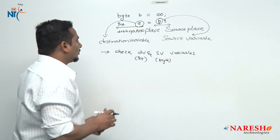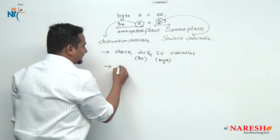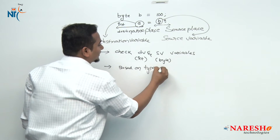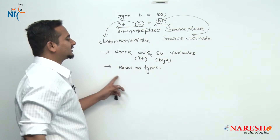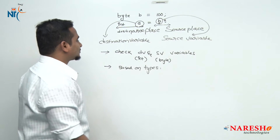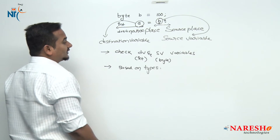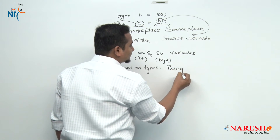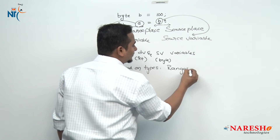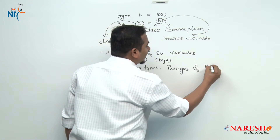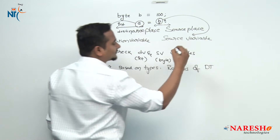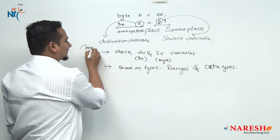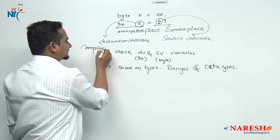Based on the types, the compiler is going to check the ranges — compiler is going to check the ranges of the data types. These are the compiler functionalities.